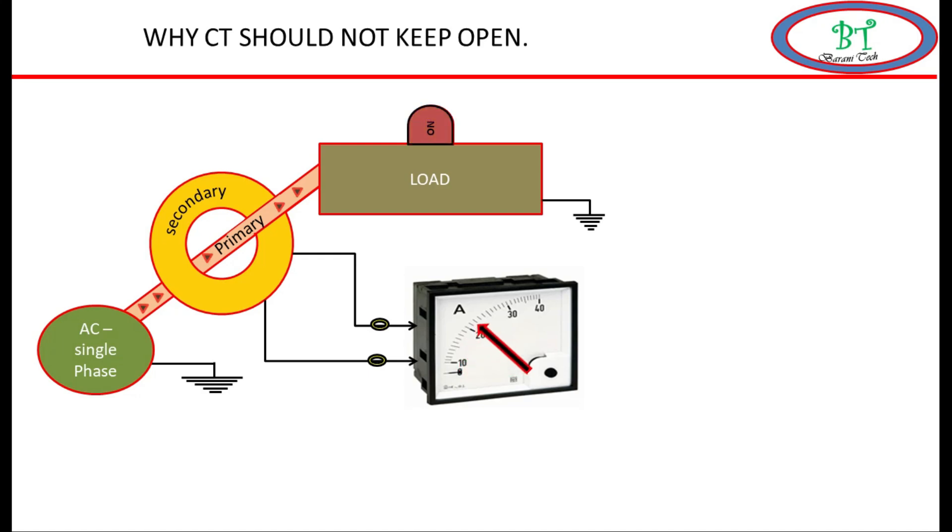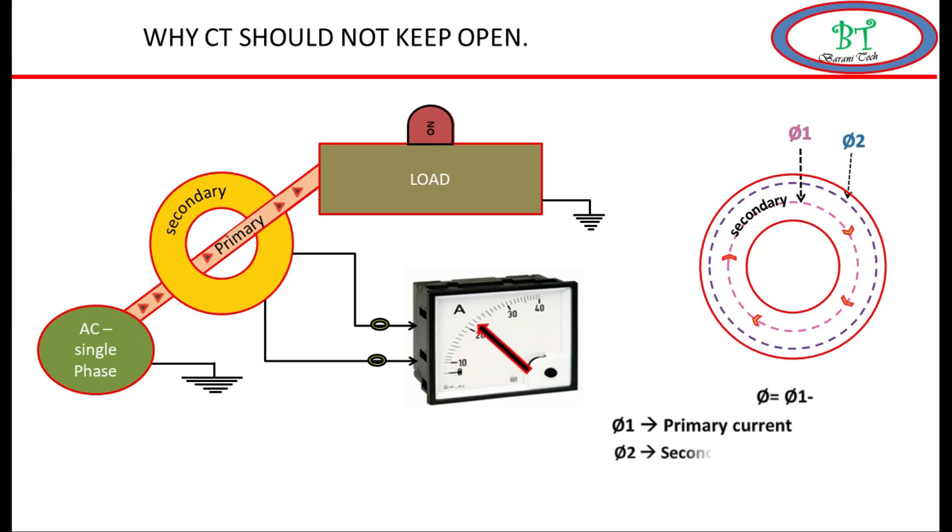When the load is on, depending on the load current and the CT ratio, the secondary current will be produced. And also due to the primary current, the main flux is produced which causes production of secondary voltage.